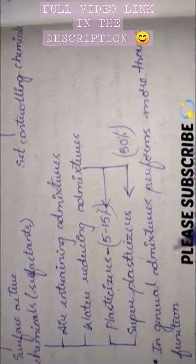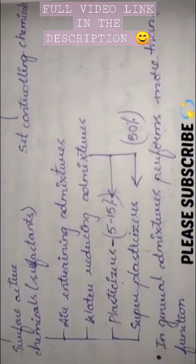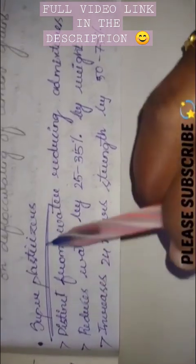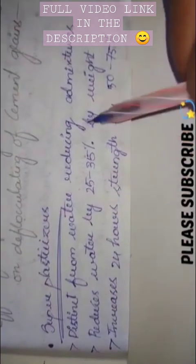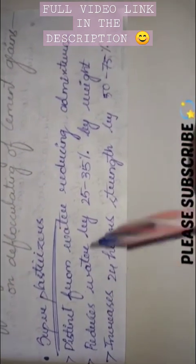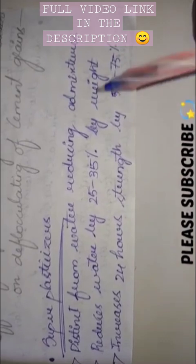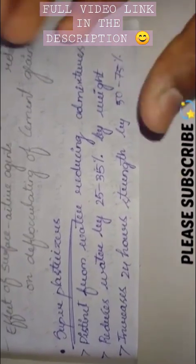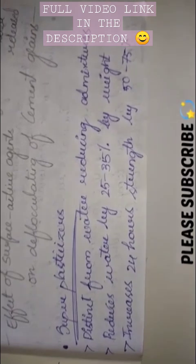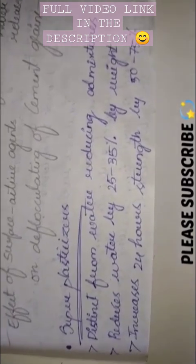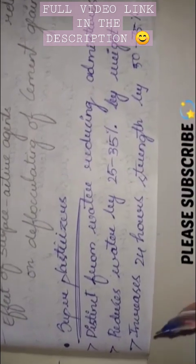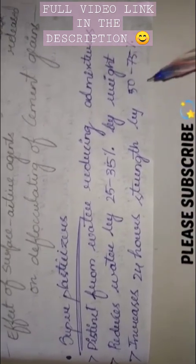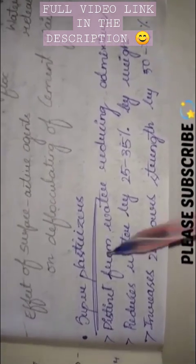So let us now see what is a super plasticizer. Super plasticizers, distinct from water reducing admixtures, reduce water by 25 to 35 percent by weight. So here whatever the weight of water is there, that can be reduced by 25 to 35 percent. It increases 24 hours strength by 50 to 75 percent.